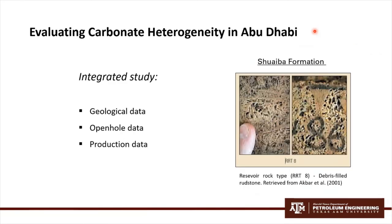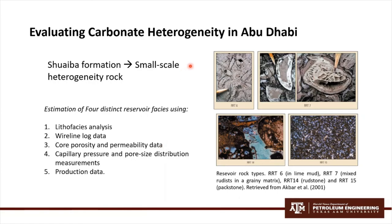Now I will explain a formation evaluation of a heterogeneous carbonate case study, performed in an oil field in Abu Dhabi from the Shuaiba formation. Scientists and engineers integrated geological data, open-hole data, and production data to obtain a more accurate model and understand the impact of different carbonate rocks. The Shuaiba formation is distinguished by small-scale heterogeneities. Four distinct reservoir rock types were estimated using lithofacies analysis, wireline log data, core porosity and permeability data, capillary pressure and pore size distribution measurements, and production data. The formation ranges from non-productive reservoir rocks to those with 30% porosity and 20 Darcy permeability.